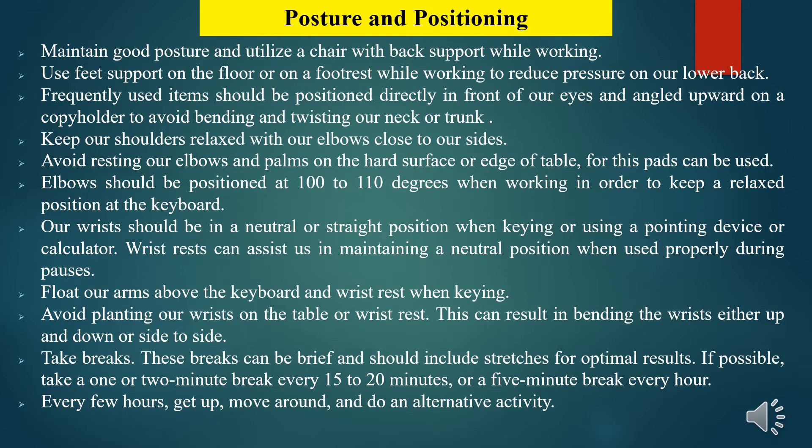Elbows should be positioned at 100 to 110 degrees when working in order to keep a relaxed position at the keyboard. The wrist should be in a neutral or straight position when keying or using a pointing device or calculator. Wrist rests can assist in maintaining a neutral position when used properly during pauses. Float the arms above the keyboard and wrist rest when keying, and avoid planting the wrist on the table or wrist rest, as this can result in bending the wrist either up, down or side to side. Take breaks — they can be brief and should include stretches for optimal results. If possible, take a 1 or 2 minute break every 15 to 20 minutes, or a 5 minute break every hour, and every few hours get up, move around and do an alternative activity.